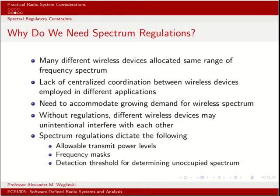Why do we need spectrum regulations? Essentially, there are many electrical devices that produce electromagnetic emissions — not only wireless devices, but any electrical appliance. There needs to be emissions and compliance testing to ensure a device is not going to interfere with everyone around it. Because many of these devices are uncoordinated, spectrum regulation ensures everybody has access to spectrum in a way that minimizes interference.